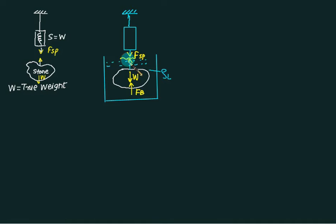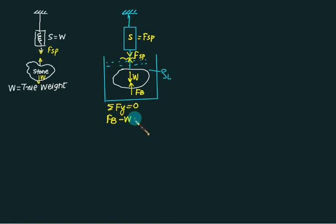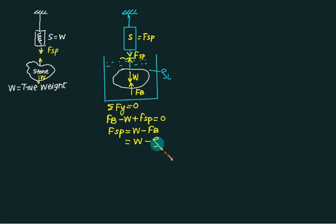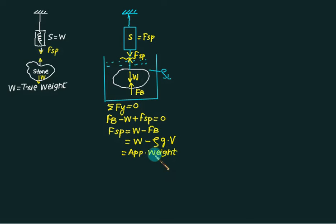The tension in the spring is an upward inward force. Applying sigma F = 0: buoyant force is upward (positive), weight is downward (negative), and spring force is upward (positive). So spring force = W − buoyant force. This reading is called the apparent weight — it is less than the true weight by the buoyant force, where buoyant force = ρ_liquid × g × volume displaced (volume of the whole body).